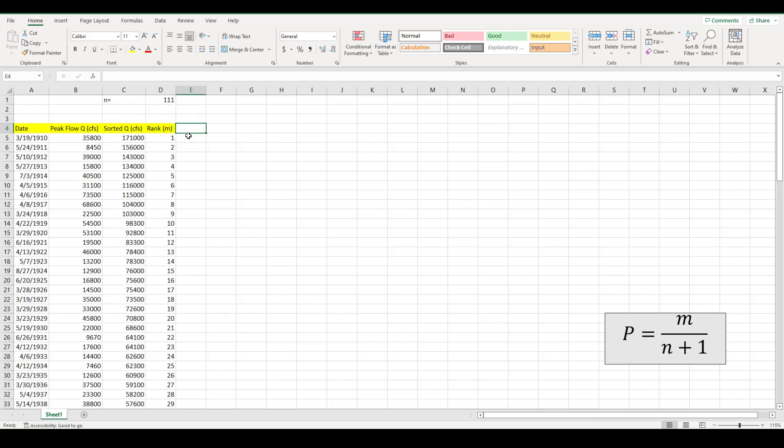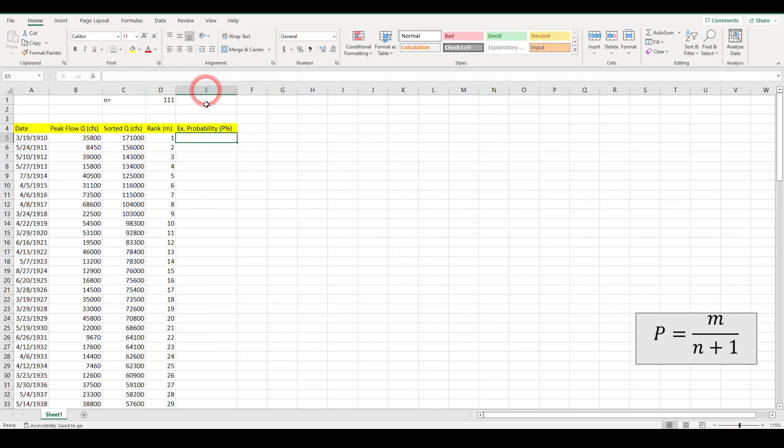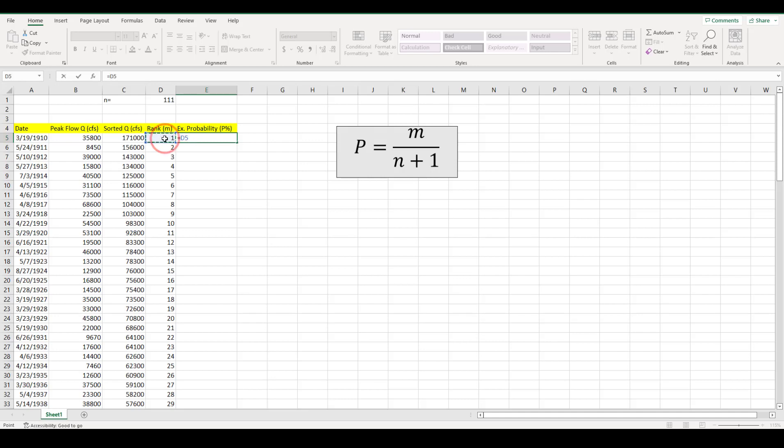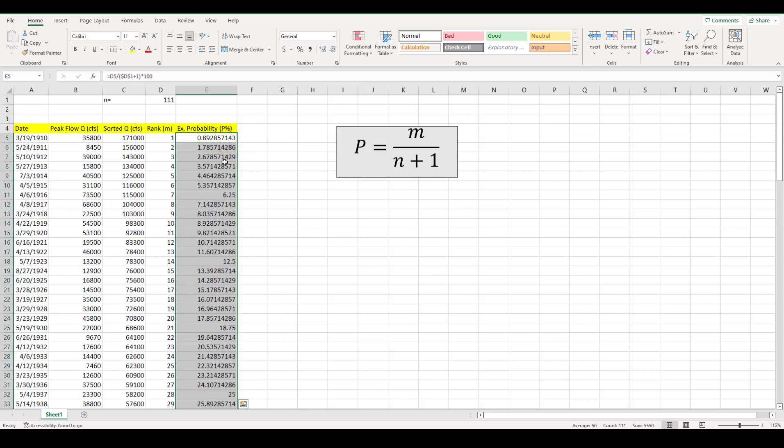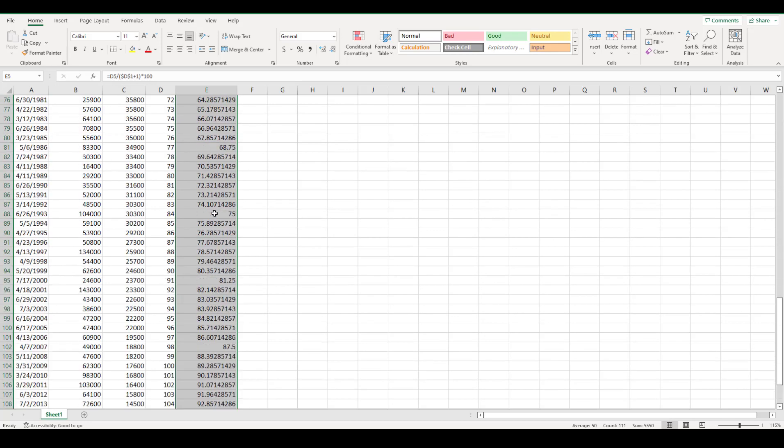And the last thing that I want to calculate is the exceedance probability. So I want to write exceedance probability and I'm going to write this as P and the unit for that is going to be percent. I just need to use the Weibull formula that I have written for you right over here. I have the rank and I have N. I just need to write this formula and multiply this by 100. That gives me a percent. So let's write this down. M is the rank divided by N plus 1. N is over here. I'm going to press F4 to fix that cell, plus 1. And then this should be multiplied by 100 to give me the percents. And then I'm going to double click on this small square over here to have the percentage for all the others.